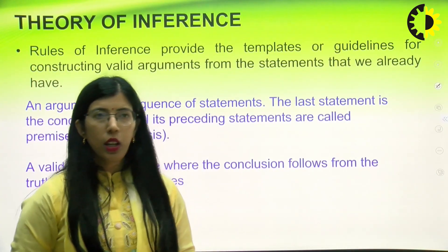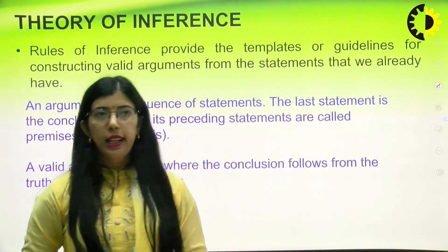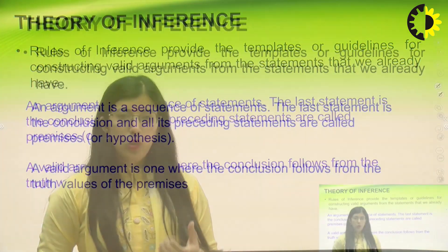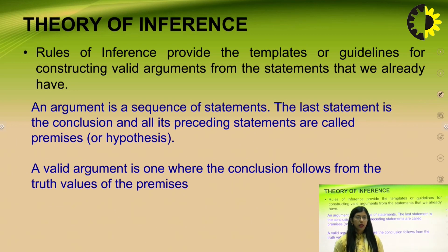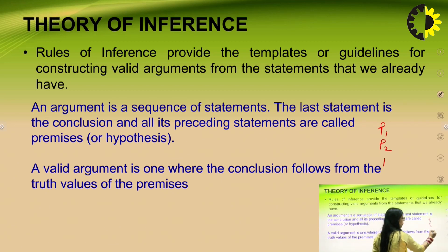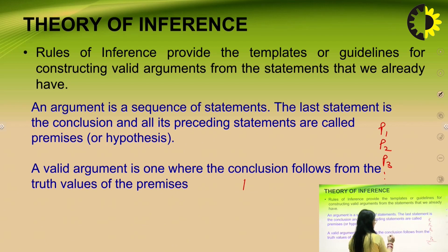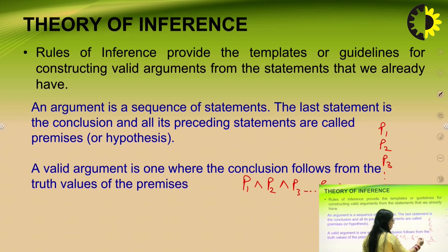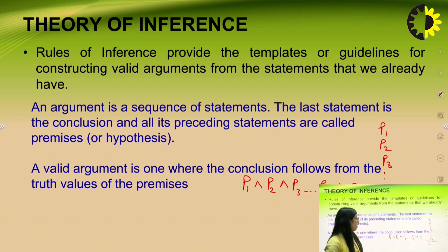Rules of inference provide the templates or guidelines for constructing valid arguments from statements that we already have. Those statements we call premises, and the conclusion we derive from these premises. An argument is a sequence of statements — the last statement is known as the conclusion and the preceding statements are called premises. Let's say we have premises P1, P2, P3 and so on. From all these premises we can derive a conclusion. When all of these premises are true, it implies that the conclusion is also true. A valid argument is one where the conclusion follows from the given premises.